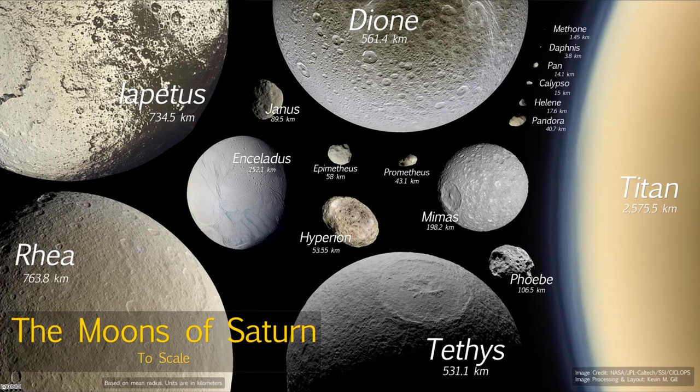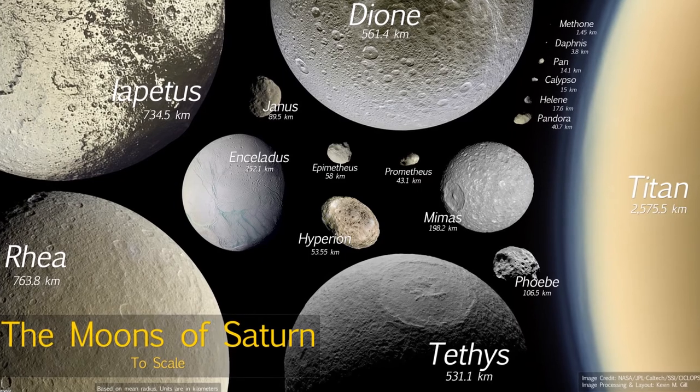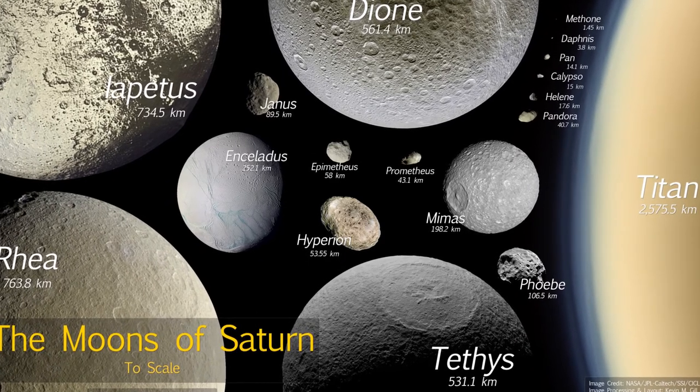Liquid water could indeed exist on the surface of any one of the moons of 55 Cancri f, and if it were like the gas giant planets of our solar system, it could have many, many satellites. Saturn for example has 82 moons, of which five have diameters of over a thousand kilometers.